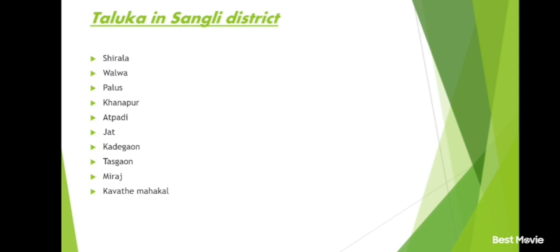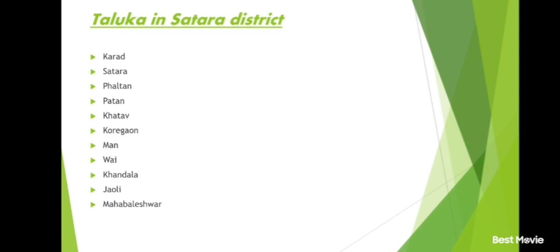Ratnagiri district and its talukas: Ratnagiri, Pulum, Sangameshwar, Khed, Dapoli, Rajapur, Guhagar, Lanja, Mandangad.